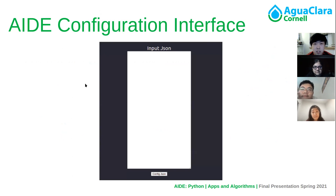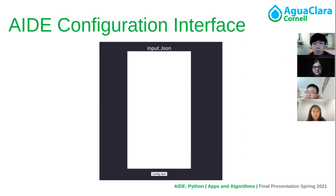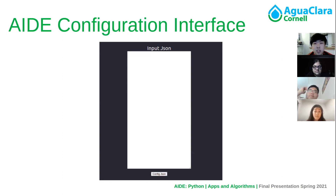For the frontend, we are designing an interface using React with three different columns. One column is for the input JSON. A second column will have each individual attribute separated and changeable once the JSON input has been provided. Finally, after the attributes have been changed or left as-is depending on the user's preferences, a JSON schema will be generated and returned to the user. The whole interface is being built using React and JavaScript.